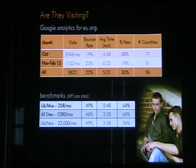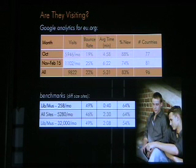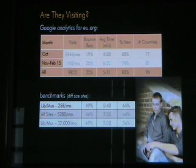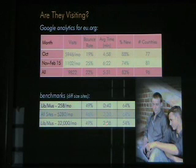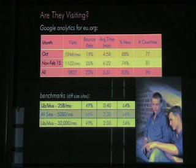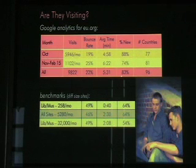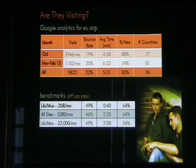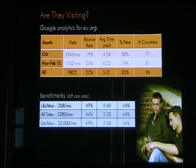They could just be clicking around — are they stopping and spending any time? Looking at average time visitors spend on the site, if we discount small sites because we really aren't in that category, for libraries and museums, which are most comparable, you have about two minutes. For all medium sites, about two and a half minutes. If you look at our consistent numbers for November through February: six and a half minutes. People are spending, on average, three times longer on our site than on other museum and library type sites.